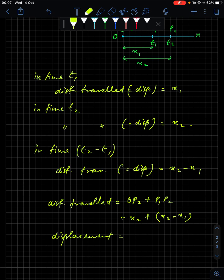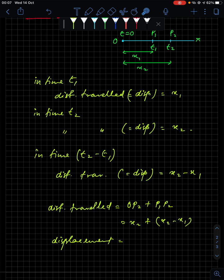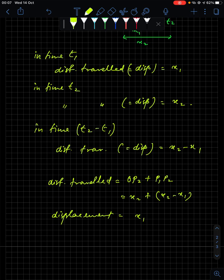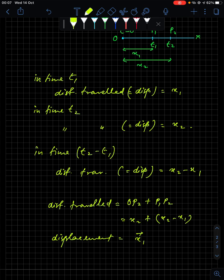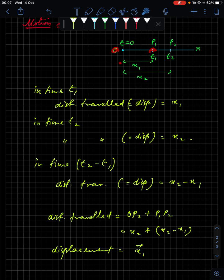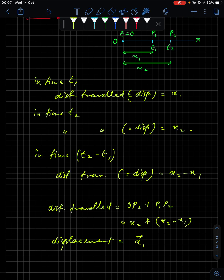Now what is the displacement? By definition, displacement is the straight-line length between the initial and the final point. The initial point is O and the final position is P1, so the length is x1. Therefore the displacement in the present case is x1 — we put a vector sign because displacement is a vector quantity.